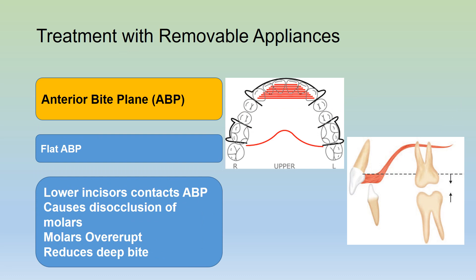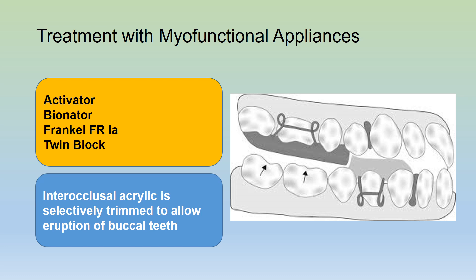This can be achieved with removable appliances by the use of an anterior bite plane, which can be a flat anterior bite plane. The lower incisors contact the anterior bite plane, causing disocclusion of the molars. The disoccluded molars will over-erupt and thus reduce the deep overbite anteriorly.